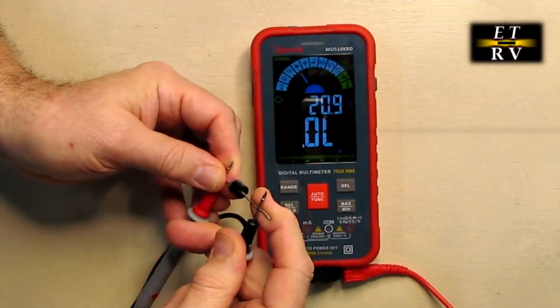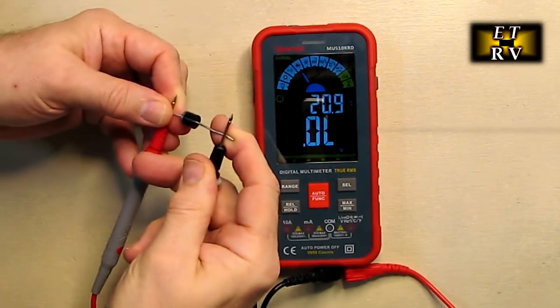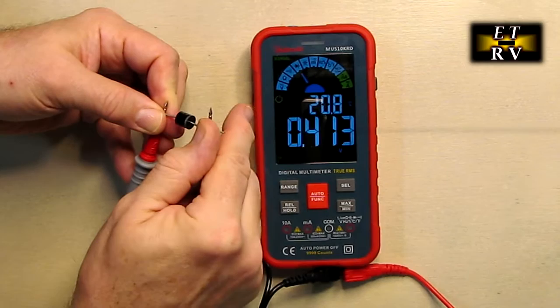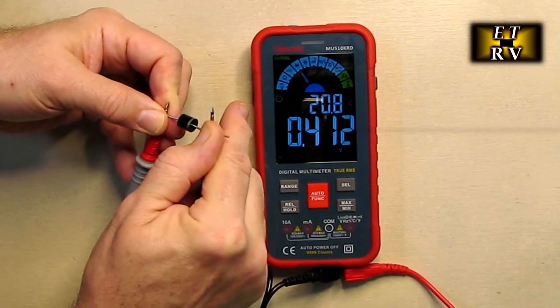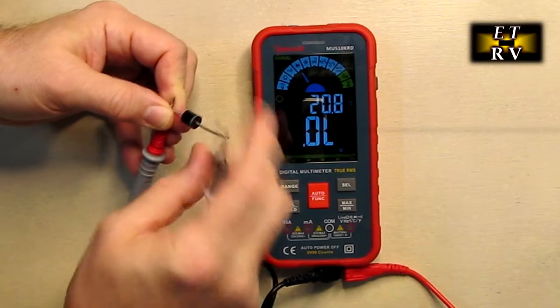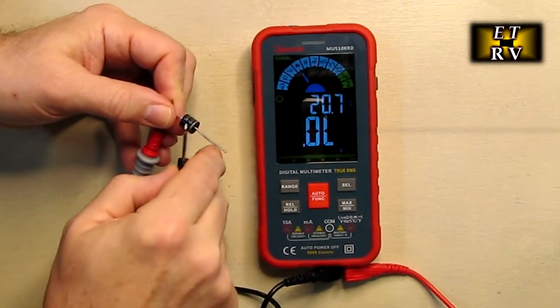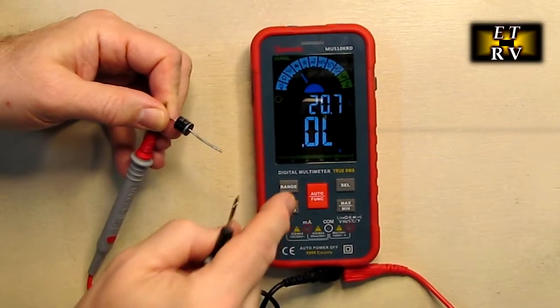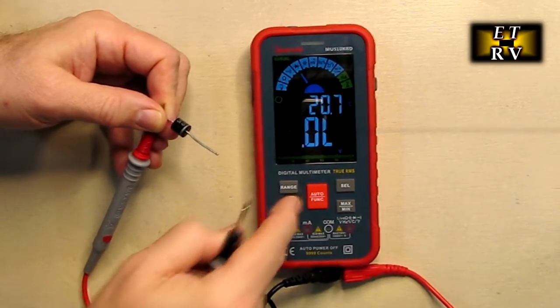you notice it doesn't show any conduction because now you're not forward biasing that diode. So that's excellent for determining bad diodes in a circuit. A lot of power amplifiers use diodes just like this in the front end for rectification, we're able to test it now using the Astro AI meter.